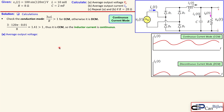Since we are in CCM, the average current in the inductor equals the average current in the load, because the average current of the capacitor is zero. The average output voltage for a full wave rectifier is 2·Vm / π. With Vm = 100 V, this gives 2 × 100 / π ≈ 63.66 volts.